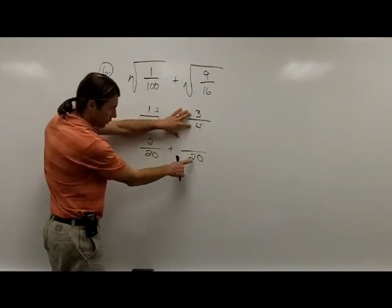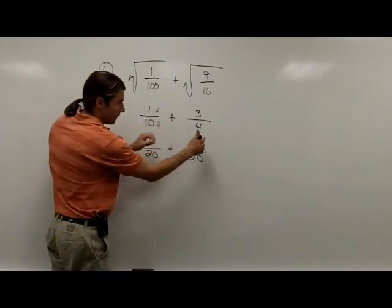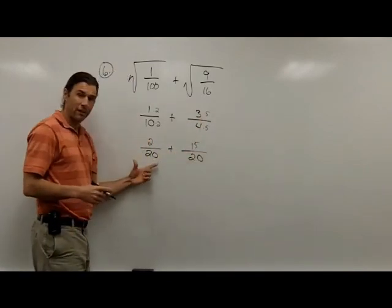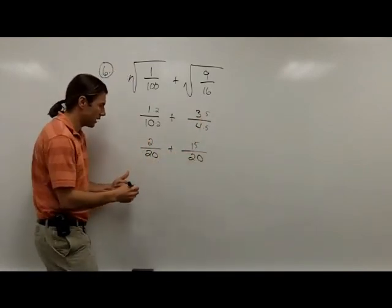Second fraction, starting with 4 getting to 20, I'll have to multiply by 5, which will give me 15/20. Now that I have a common denominator, I can add these fractions together.